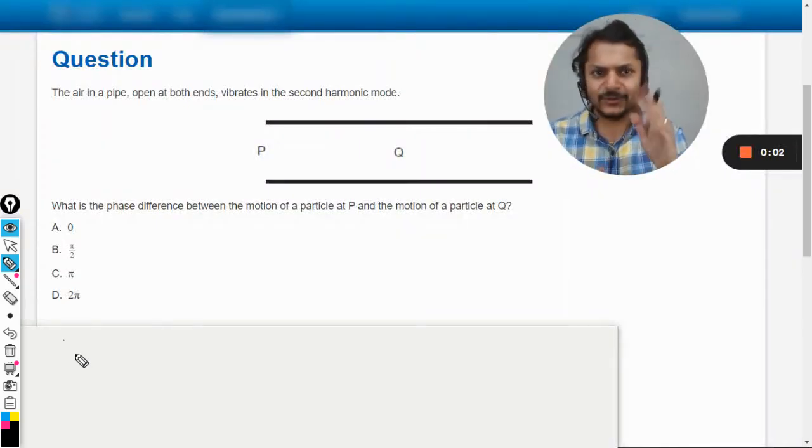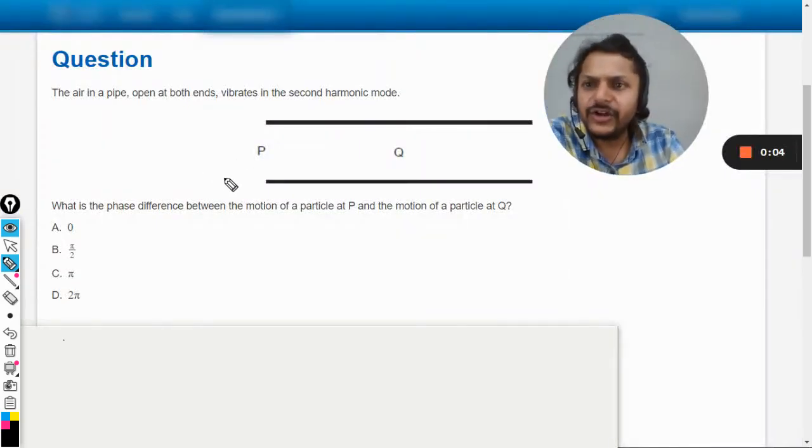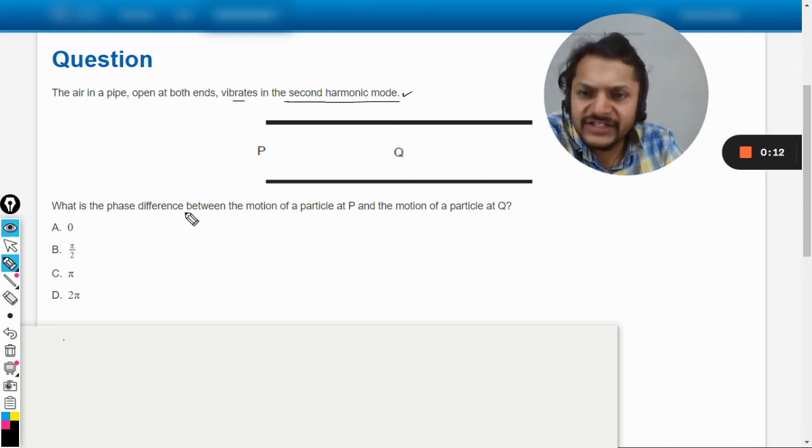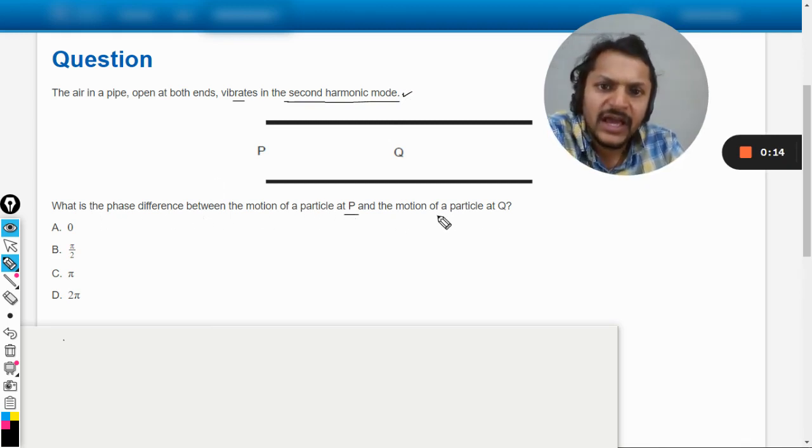Okay dear students, let us see what is there in this question. The air in a pipe open at both ends vibrates in second harmonic mode. What is the phase difference between the motion of the particle at P and the motion of the particle at Q?